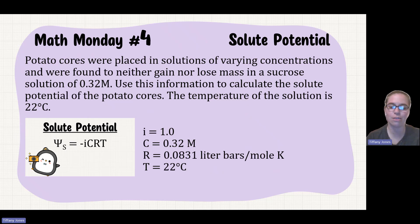R is a given value, 0.0831 liter bars per mole Kelvin, and my temperature is 22 degrees Celsius, but I need to be in Kelvin. So you're going to take your degree Celsius and add 273, which brings us to our temperature being 295 Kelvin.